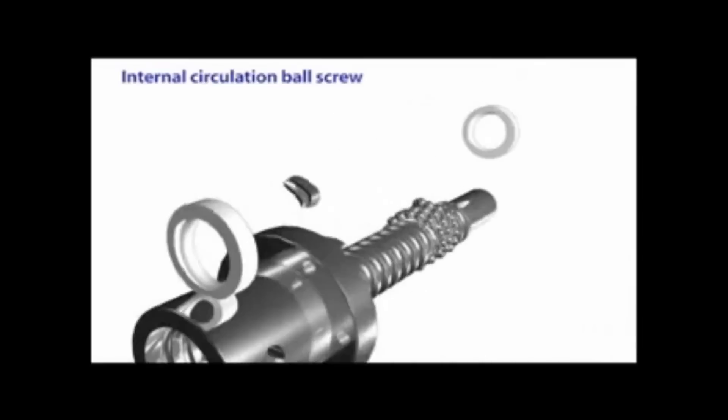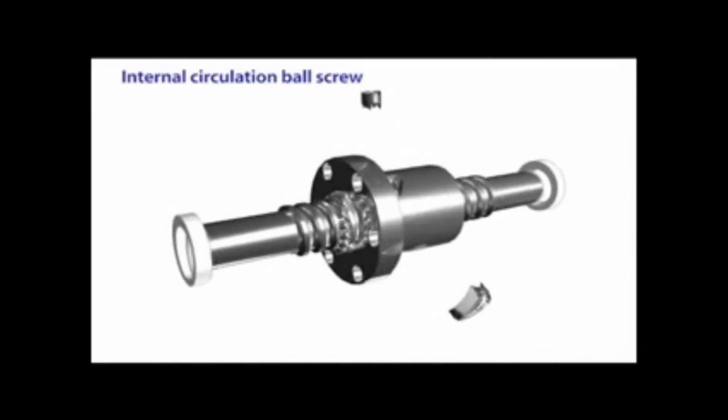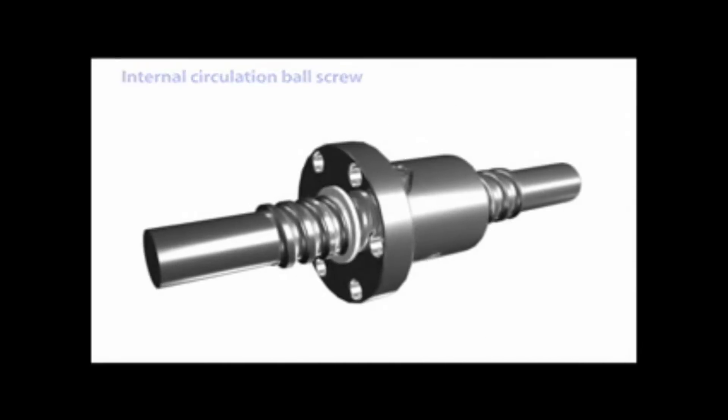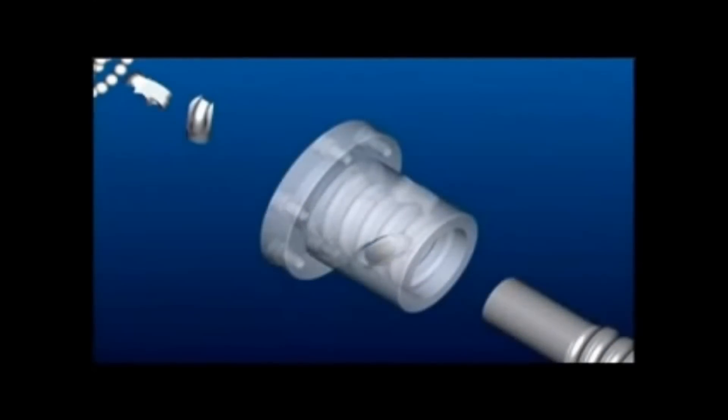The bearings circulate in single circles. The return cap spans two adjacent bearing races, forming a single closed circuit. Because the return cap is installed within the nut, this type of ball screw is known as an internal circulation ball screw.